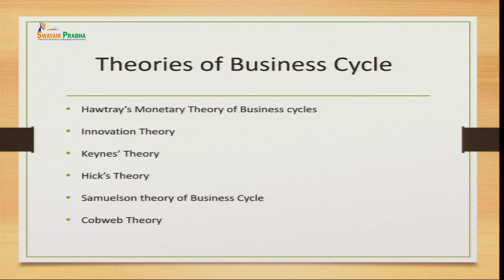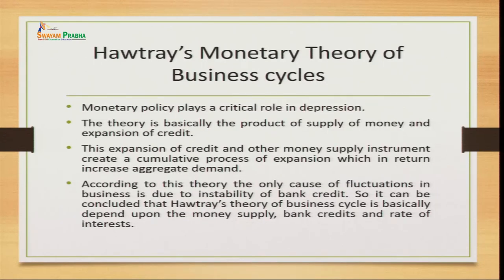Before we start with the theories, let me tell you what we will cover. We will start with Hothray's monetary theory of business cycle, then the innovation theory given by Schumpeter, then the theory given by Keynes, then Hicks' theory of business cycle, then Samuelson's theory of business cycle, and finally the Cobweb theory. Let us begin with the very first theory — Hothray's monetary theory of business cycle.